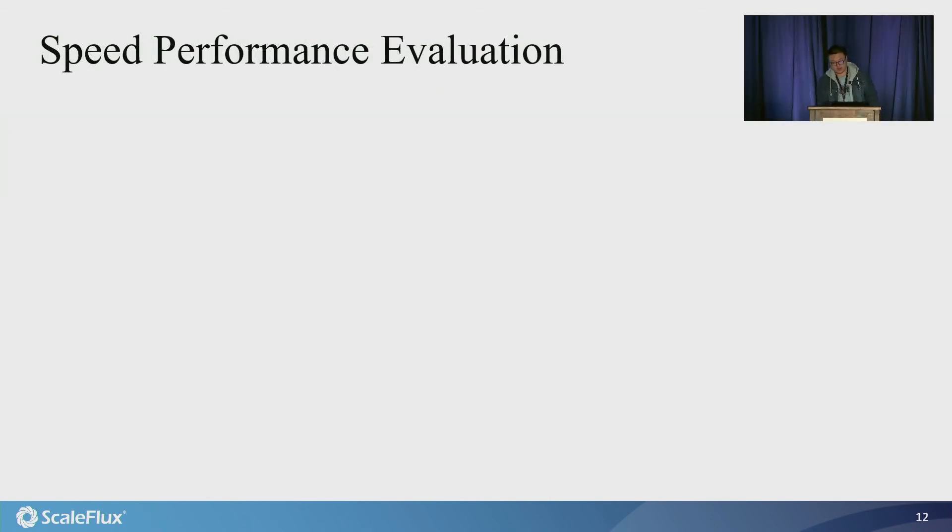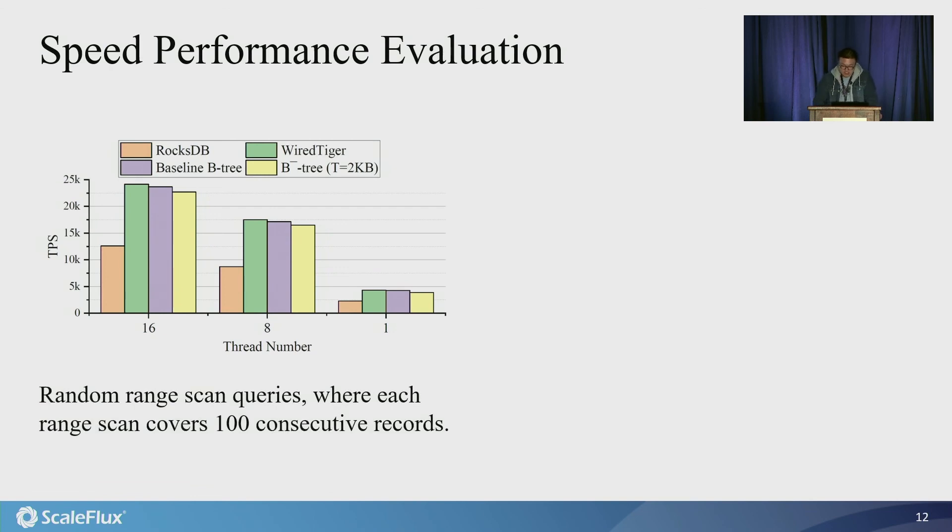So here we evaluate the speed performance. This figure shows the mirror TPS with random range scan queries. B+ tree and B-minus tree have noticeably a smaller difference in terms of the range scan performance. This is because two overheads of B-minus tree can be amortized among the records covered by each range scan, like fetching an extra 4KB block and in-memory page reconstruction. In comparison, RocksDB has noticeably worse range scan throughput performance than others, because range scan invokes reads over all the levels in LSM tree, leading to very high read amplification.